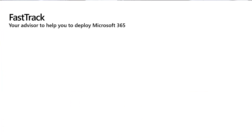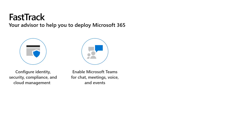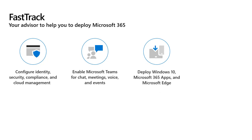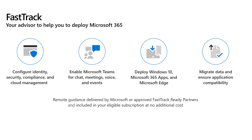FastTrack helps customers to configure identity, security, compliance, and cloud management, and enables Microsoft Teams, including chat, meetings, voice, and events. It also helps guide the deployment of Windows 10, other Microsoft 365 apps, and Microsoft Edge. Additionally, FastTrack assists with email and data migration and helps ensure application compatibility with the App Assure service.